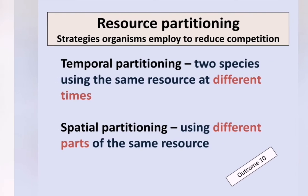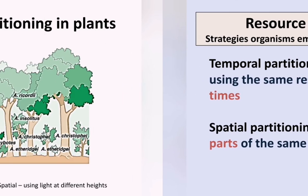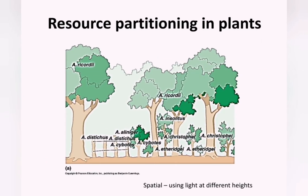We can see spatial resource partitioning in the way trees and plants grow in a forest. Because they are in competition for light, they grow at different heights, meaning they use different parts of the same resource. You'll have the canopy at the top needing direct sunlight, with ferns and mosses at the bottom which need less sunlight — so they all survive using different parts of the same resource.